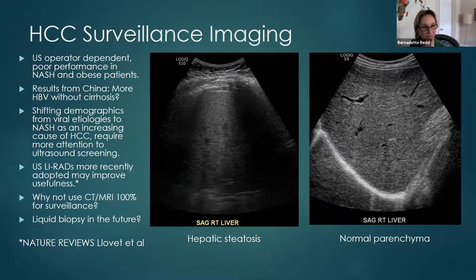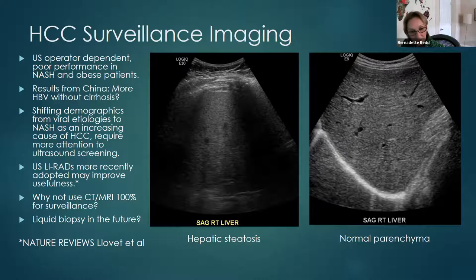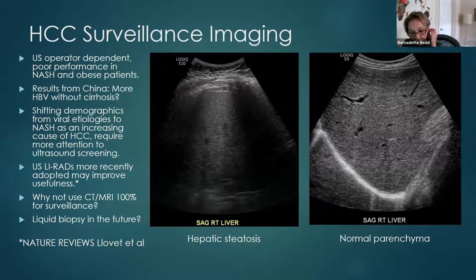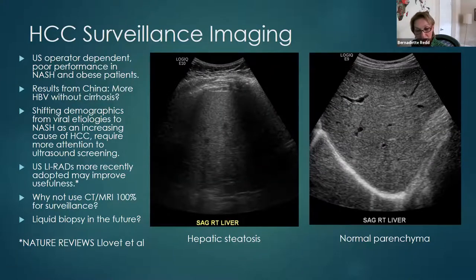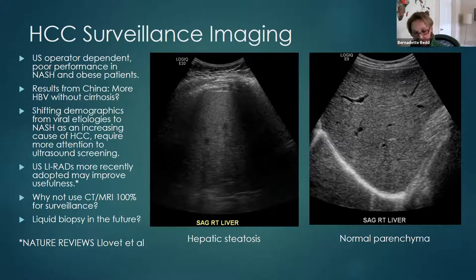Why not use CT and MRI 100% of the time for surveillance? Ultrasound is appealing because it's relatively inexpensive and readily available. Nodules can be biopsied under ultrasound guidance. CT and MRI are more expensive, involve contrast administration, and radiation exposure from CT is an issue. MRI patients may have difficulty due to claustrophobia. In the future, there may be something like a liquid biopsy or blood test that identifies DNA fragments, but even then, imaging would still likely be needed to confirm the actual location and size of the tumor.